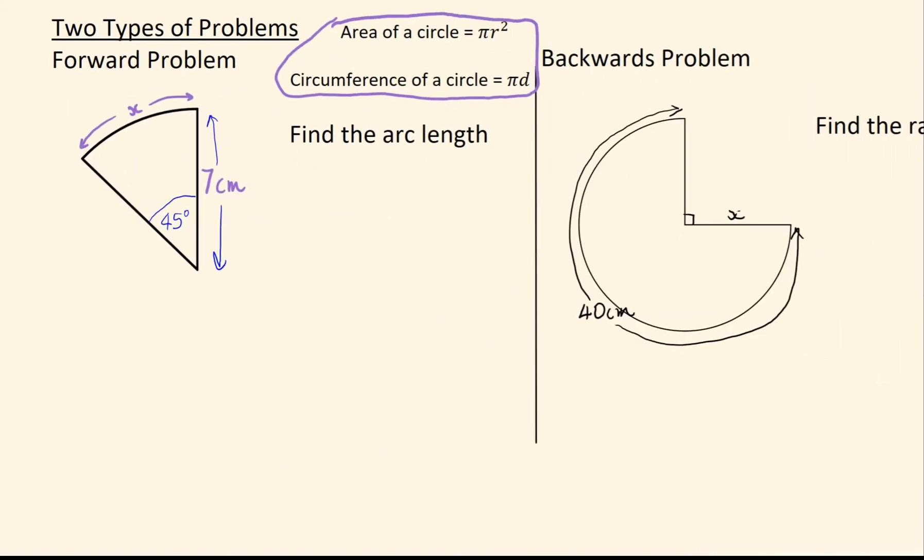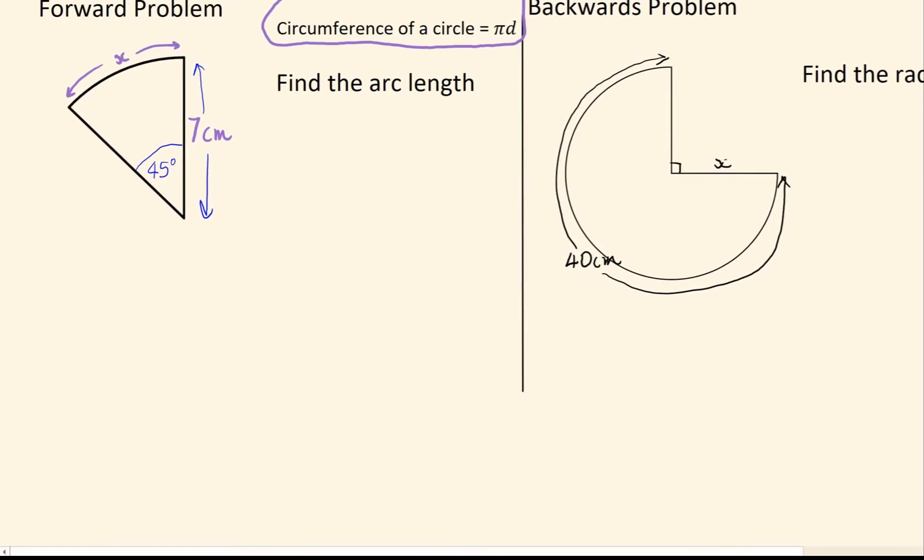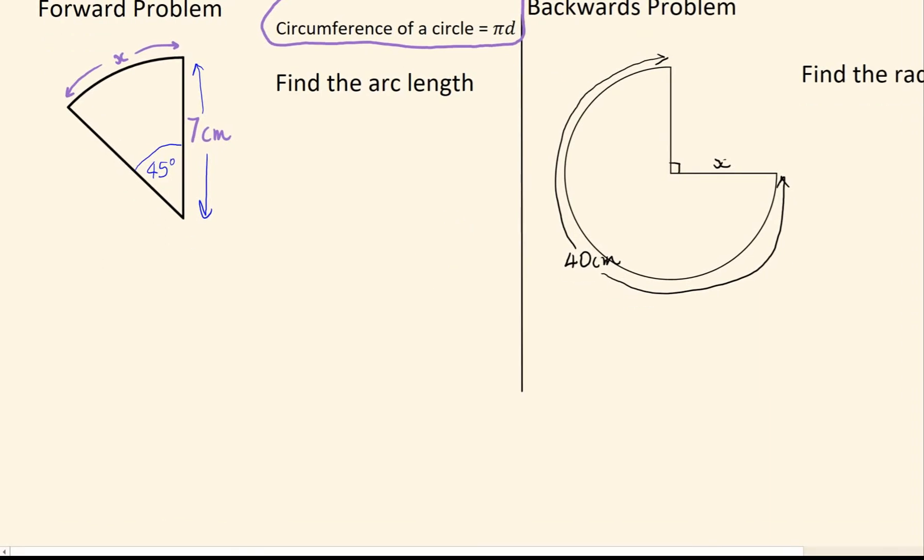For this, we're first going to recap how to solve the forward problem. So if I want to work out the arc length, what I need to do is first work out the circumference. Circumference will be the diameter times pi, so the diameter is going to be 2 lots of 7. That will give us the circumference.